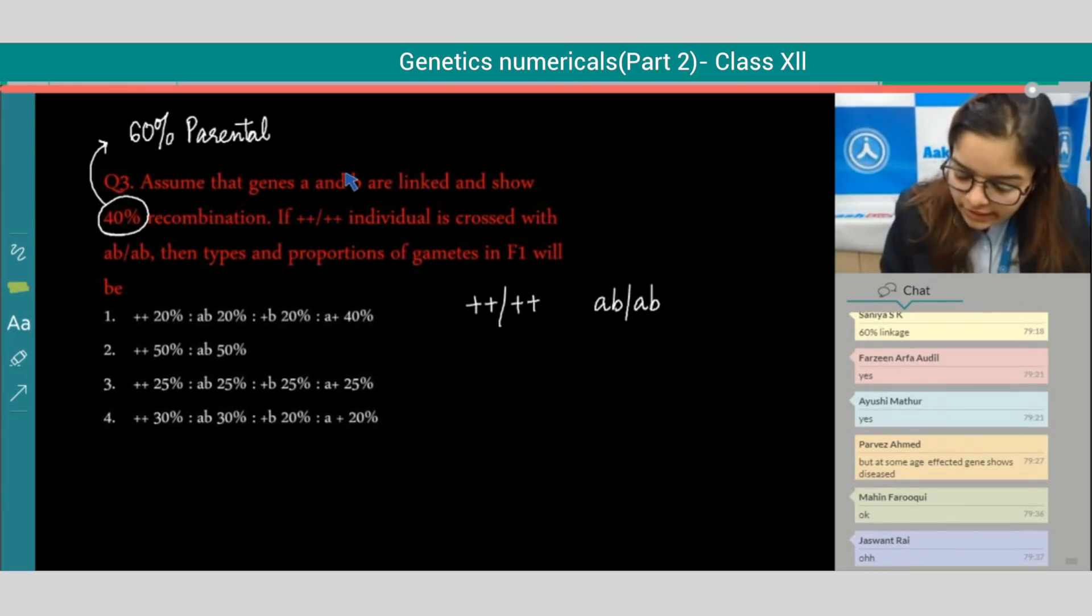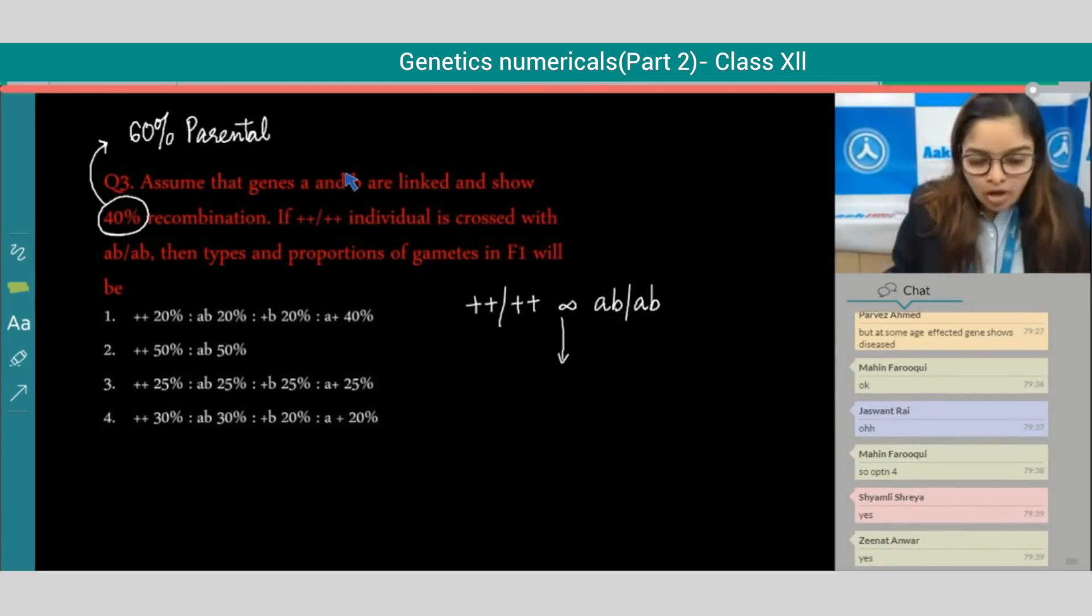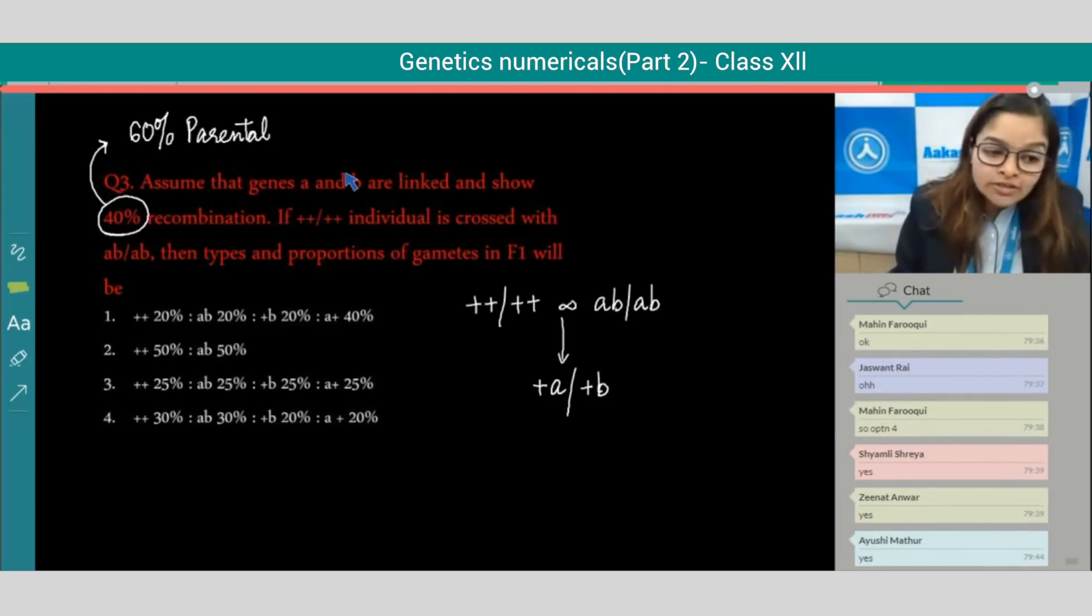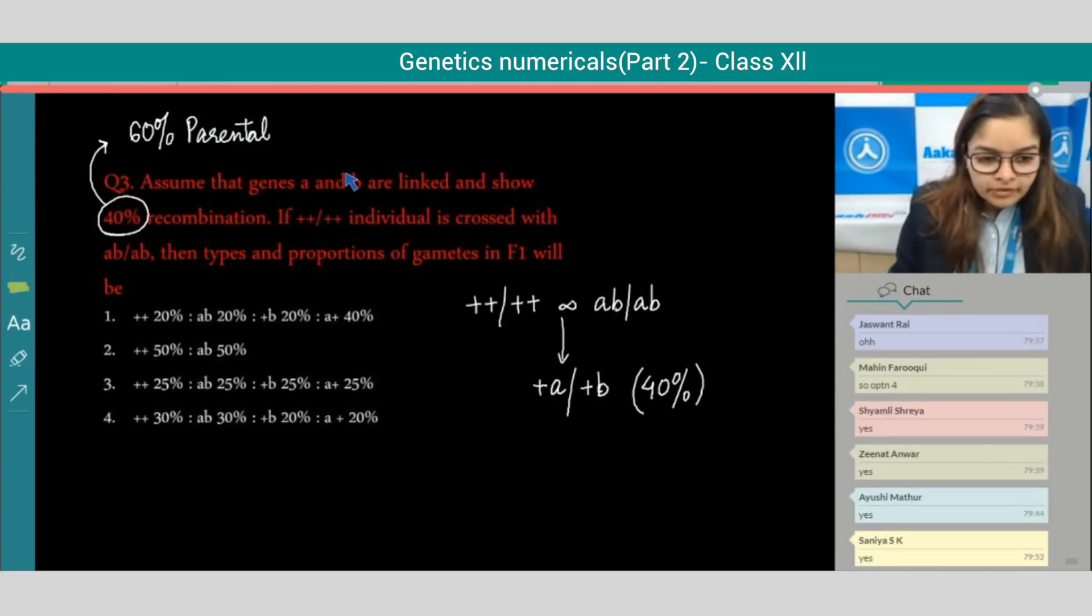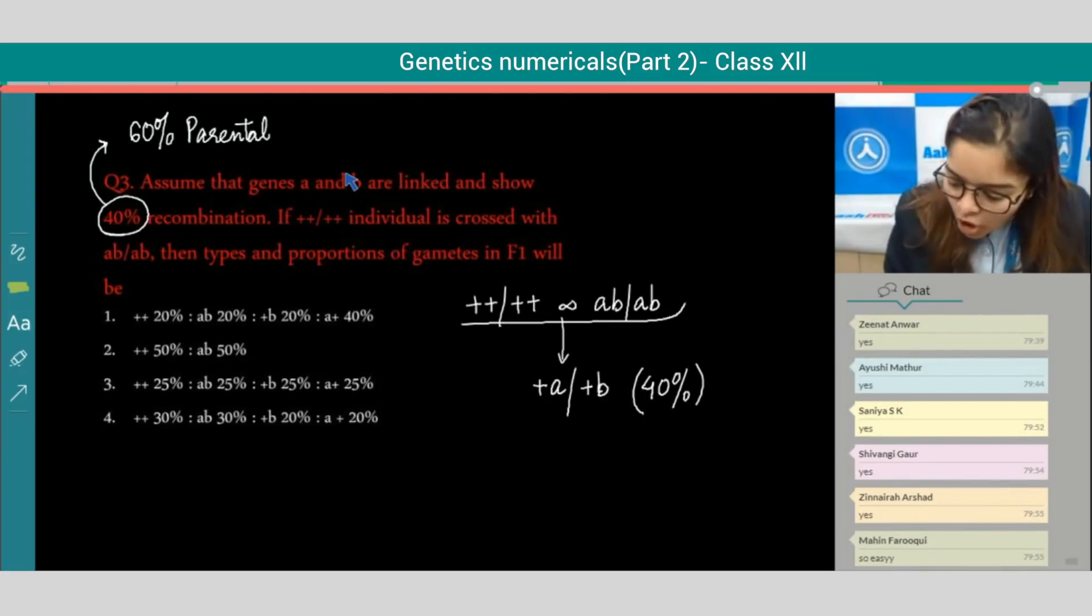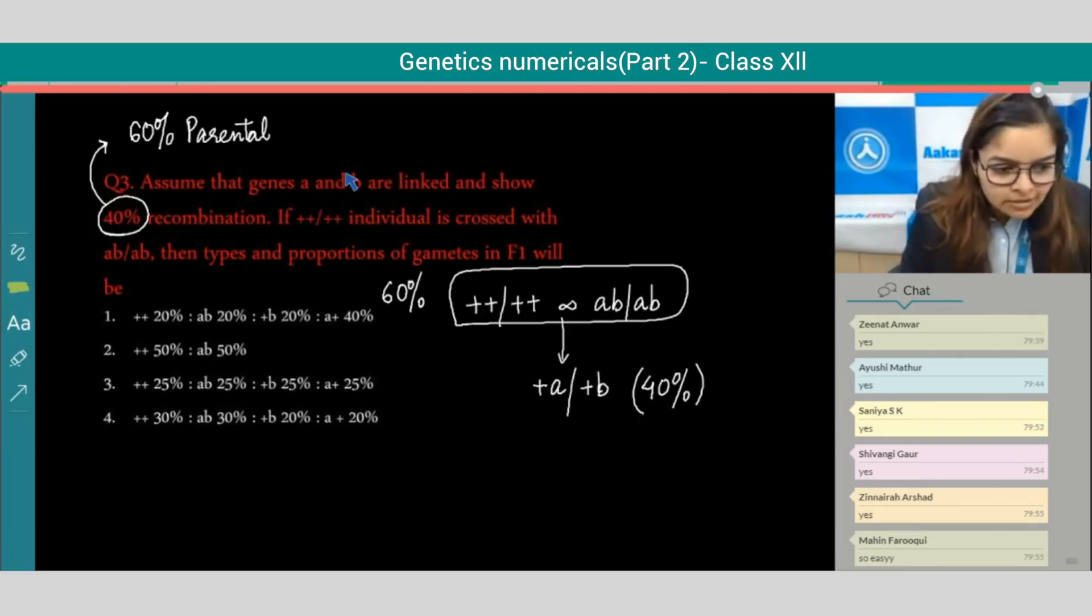All right, can I say the recombinants will be something like this? These will be the recombinants, and what is the proportion of these recombinants? They are 40 percent. So can I say the parent combination will be 60 percent? It will be 60 percent.